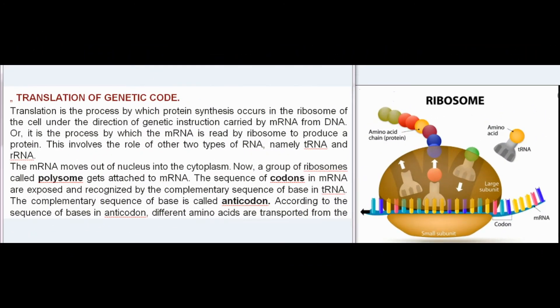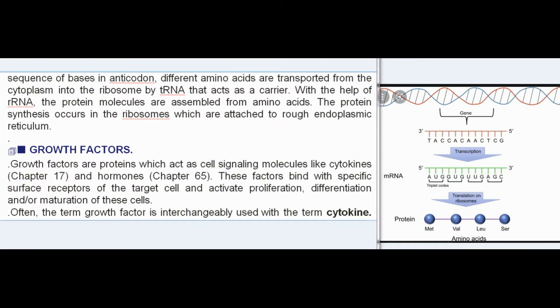Translation is the process by which protein synthesis occurs in the ribosome under the direction of genetic instruction carried by mRNA from DNA. The mRNA moves out of the nucleus into the cytoplasm, where a group of ribosomes called a polysome gets attached to it. The sequence of codons in mRNA is exposed and recognized by the complementary sequence of bases in tRNA, called the anticodon. According to the sequence of bases in the anticodon, different amino acids are transported from the cytoplasm into the ribosome by tRNA. With the help of rRNA, protein molecules are assembled from amino acids, in ribosomes attached to rough endoplasmic reticulum.